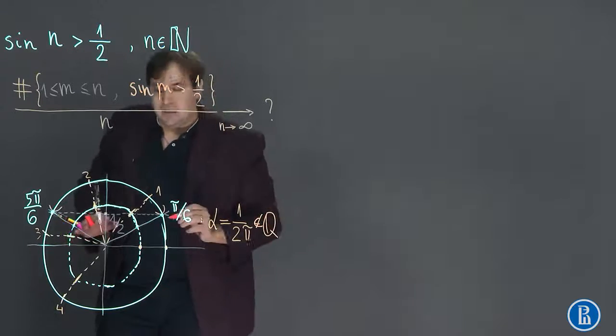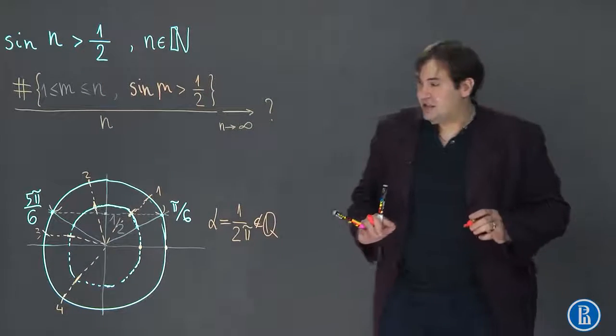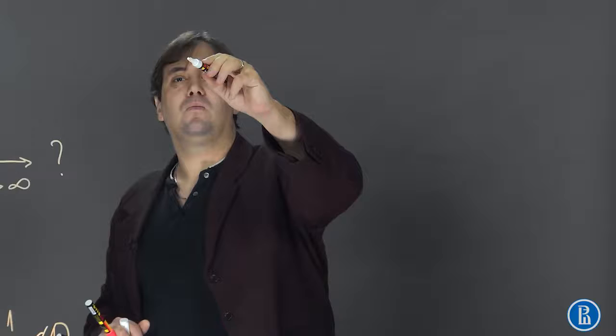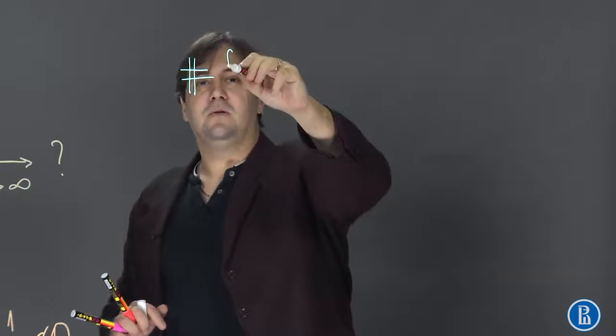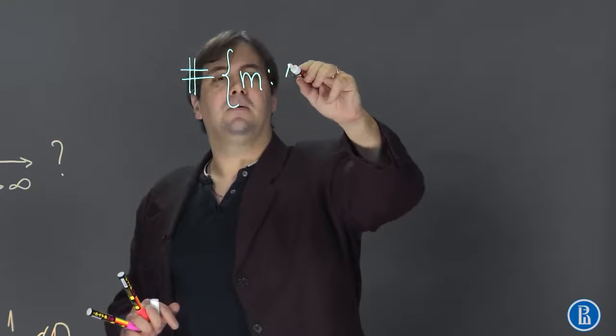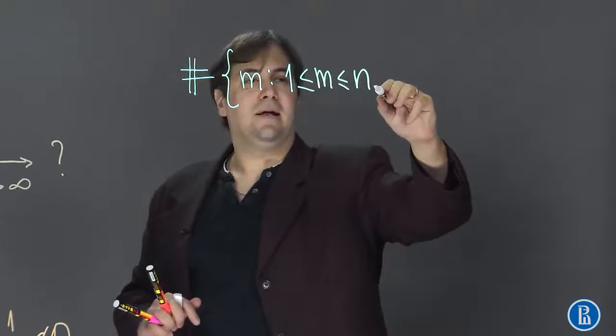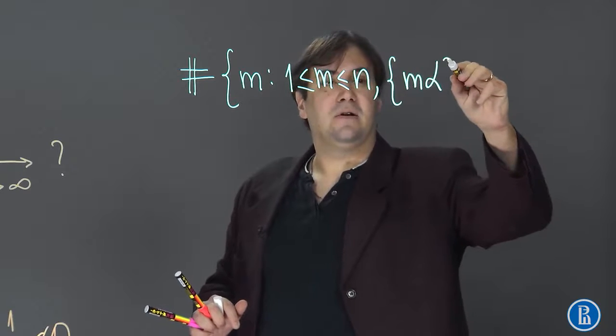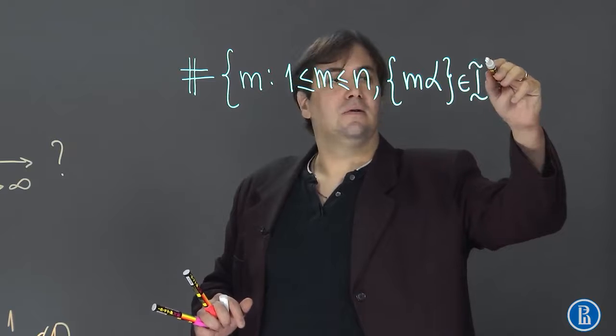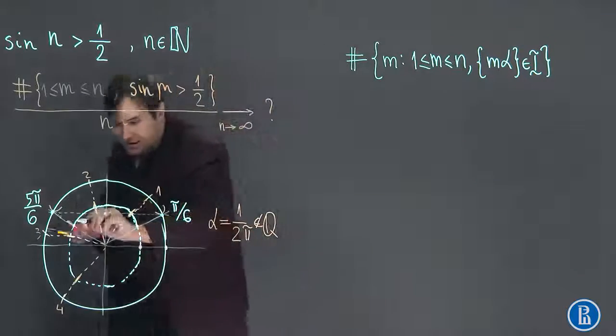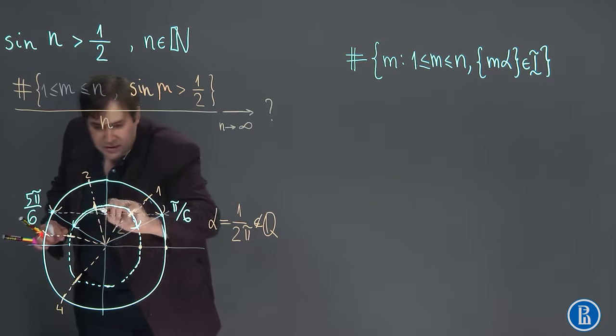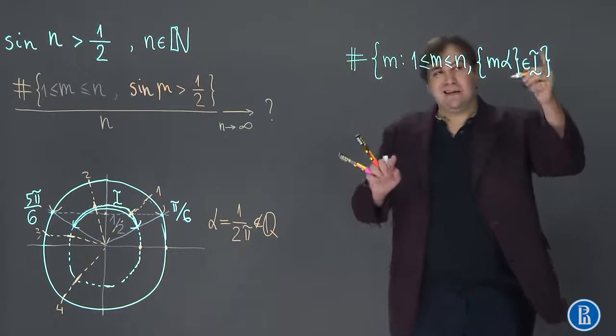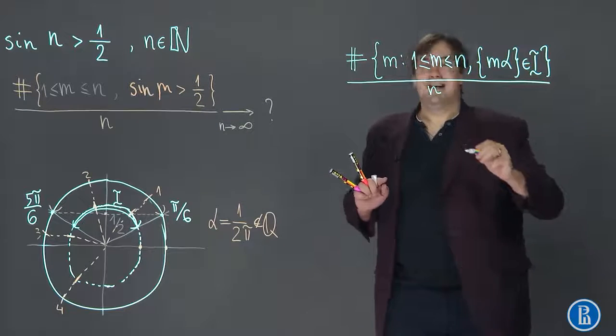This number here is of course irrational, so we can apply Weyl's theorem to this situation. We understand that the number of m such that 1 ≤ m ≤ n and at the same time the fractional part of m·α belongs to this interval I, if we count the number popping into the interval divided by n and take the limit, we will gain the length of this interval.